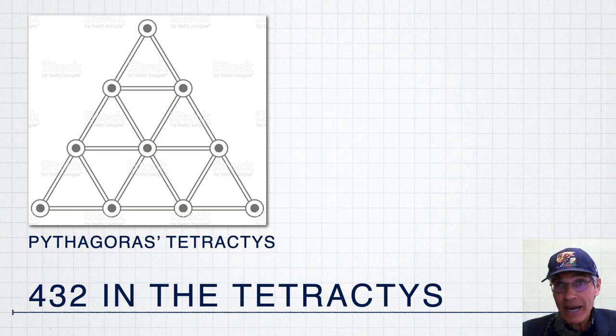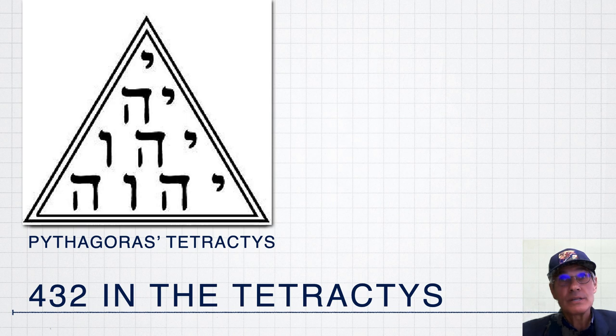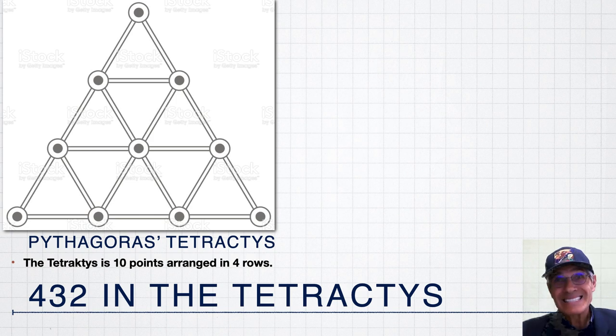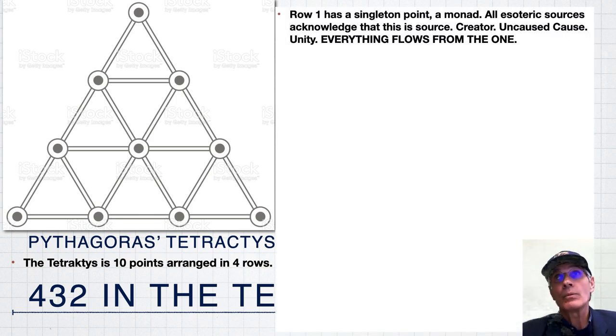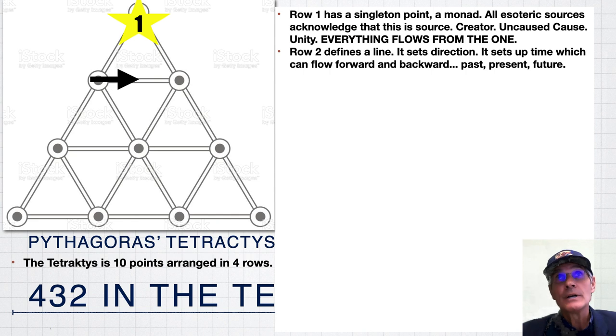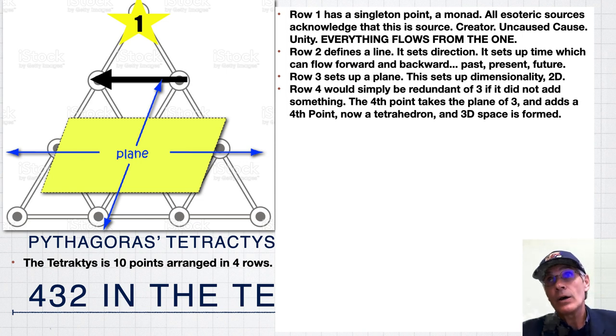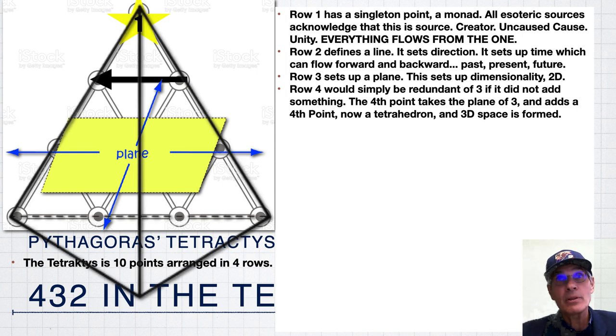Take the Pythagoras Tetractys, so important in the Egyptian mystery schools and in the Greeks. Sometimes it's pictured with these Hebrew letters. So, Yahweh, the divine name is there, but usually just the dots here. The Tetractys is 10 points arranged in 4 rows. Row 1 is a singleton point. It's the creator. Everything flows from there. Then row 2 defines a line. It sets direction and time. It goes forwards and backwards. Then row 3 sets up a plane. So now we're into dimensionality, two dimensions. But then row 4 would be redundant if it didn't add something. So it adds a point beyond the plane, and thus you have 3D space, a tetrahedron.